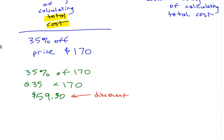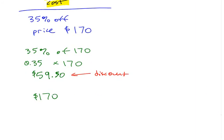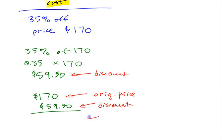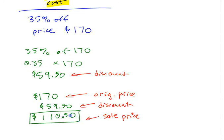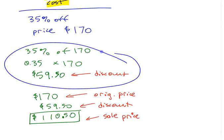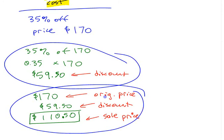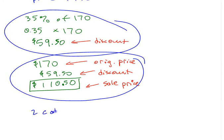Is $59.50 the answer to the question about total cost? No — you have to subtract the discount from the original price. So: original price minus the discount of $59.50 gives you the sale price. That gives you $110.50. How many calculations did I have to do? First I had to figure out the discount, and then I had to do another calculation to figure out the total cost — two steps.